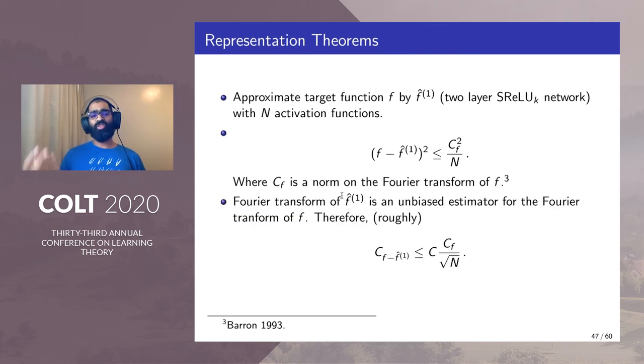After certain mollification and other surgery we can show that the Fourier transform of f̂₁ is an unbiased estimator for the Fourier transform of f. Therefore roughly the Fourier norm of the error function that is f - f̂₁ contracts by a factor of 1/√n.